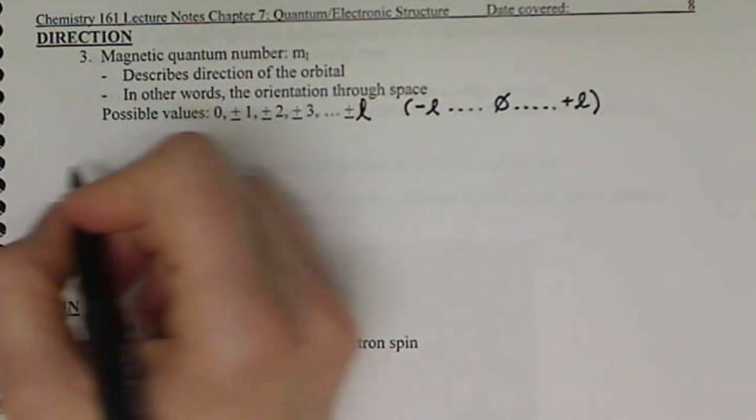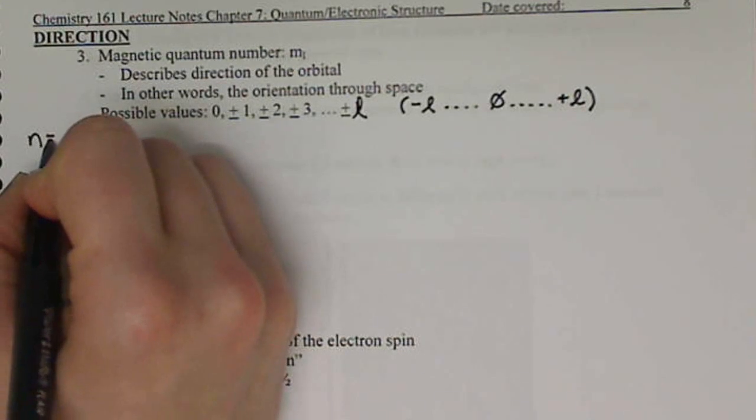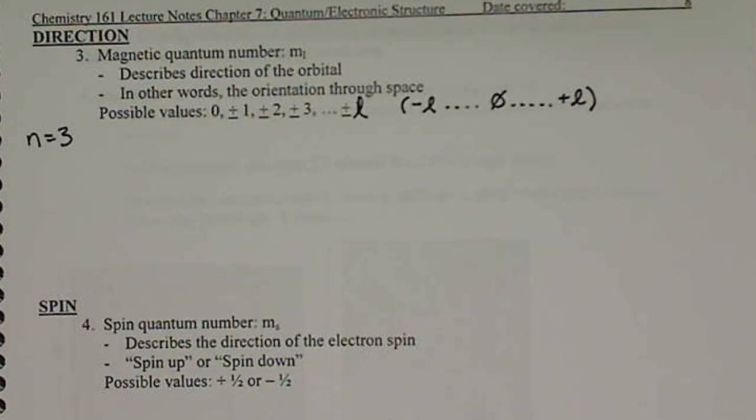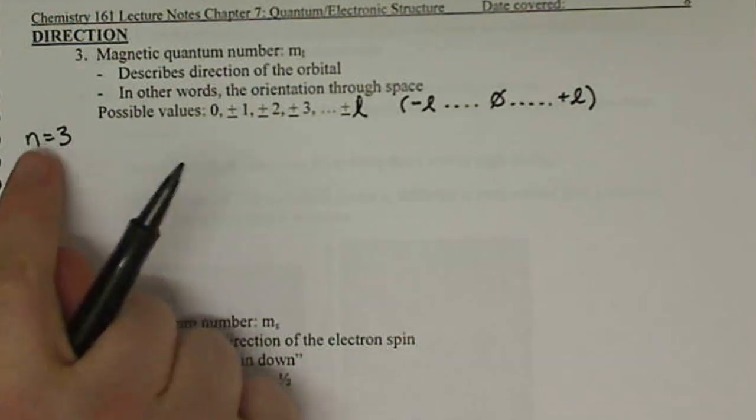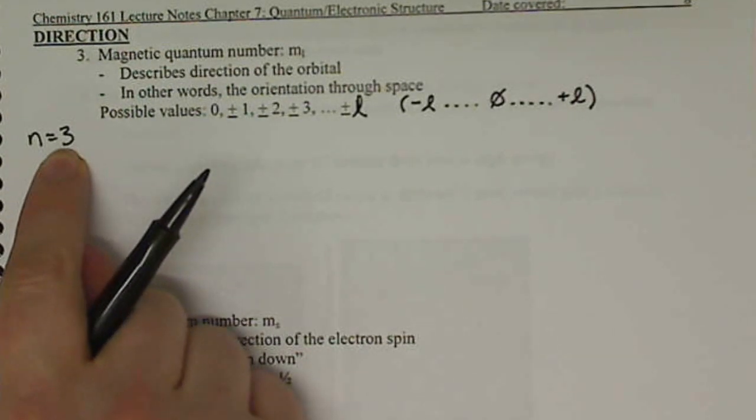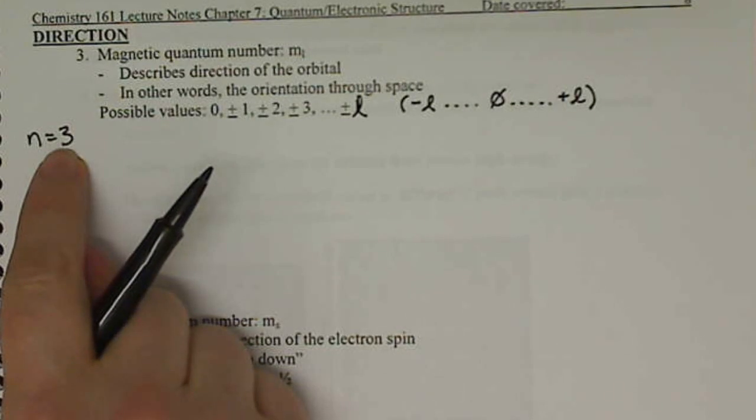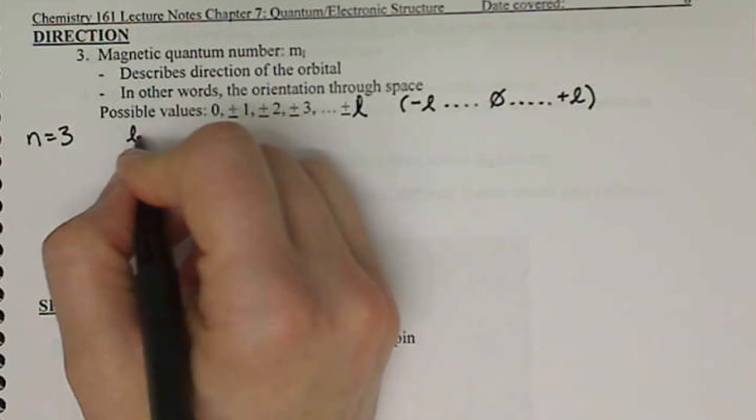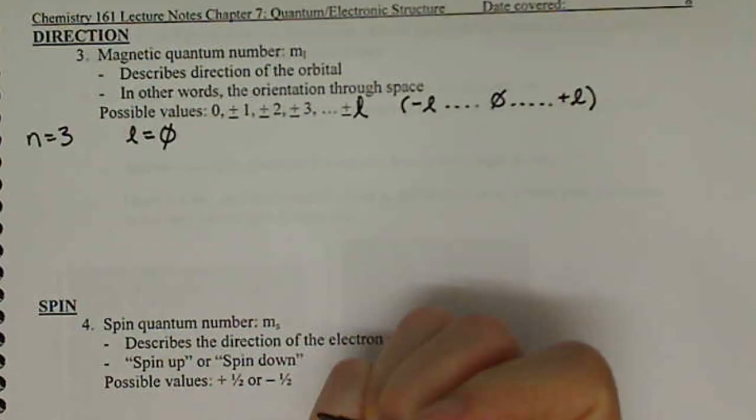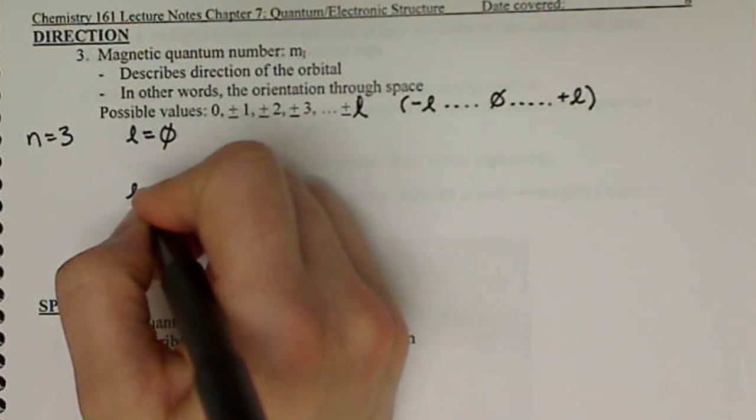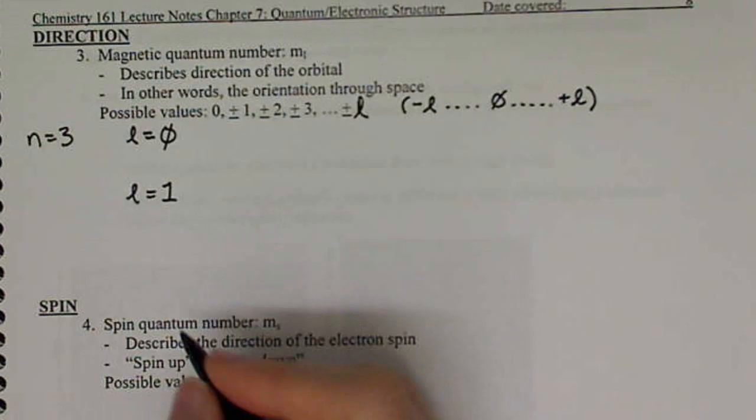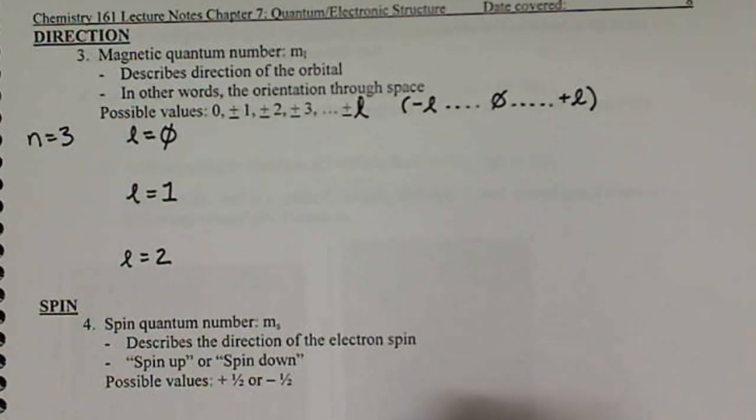The highest level we got to is n equals three working with our orbitals. So when n equals three, l can equal basically n minus one. So l has the potential of equaling zero, l can also equal one, and l can equal two.